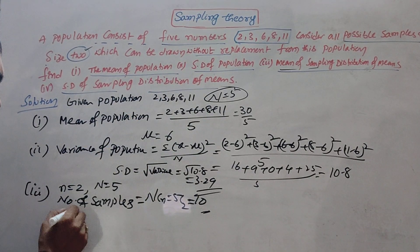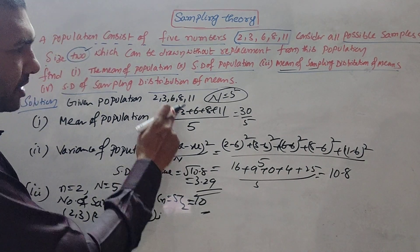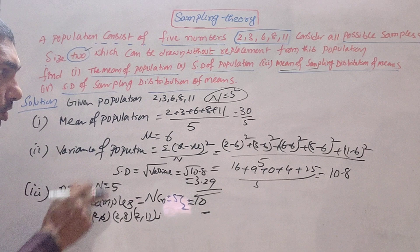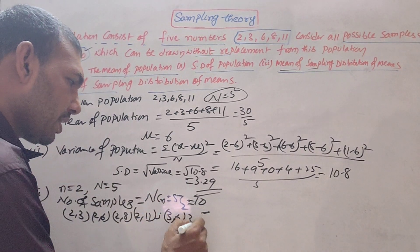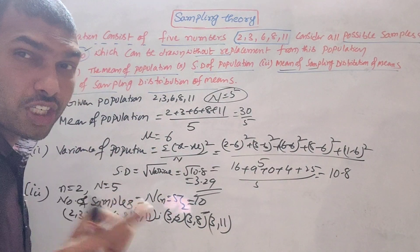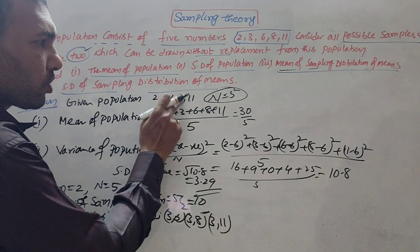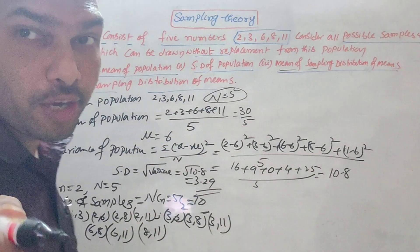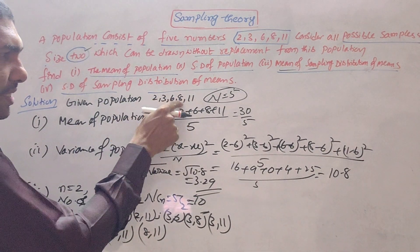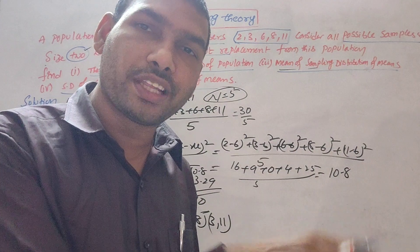The 10 samples of size 2 drawn from the population {2, 3, 6, 8, 11} without replacement are: (2,3), (2,6), (2,8), (2,11), (3,6), (3,8), (3,11), (6,8), (6,11), and (8,11). These are all the samples of size 2 drawn from the population of size 5 without replacement.